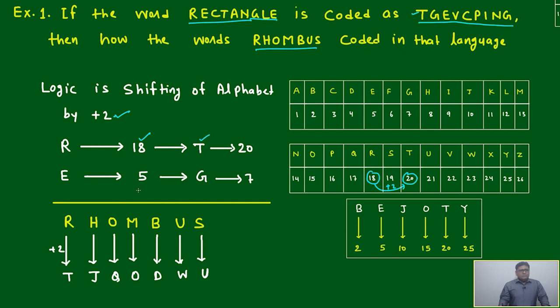The second letter is E. E represents 5 and here it is G, which represents 7. So here also it is plus 2. This means the same logic will work for all the alphabets in this particular word. RECTANGLE has converted to TGEVCP ING based on shifting the alphabet by plus 2.